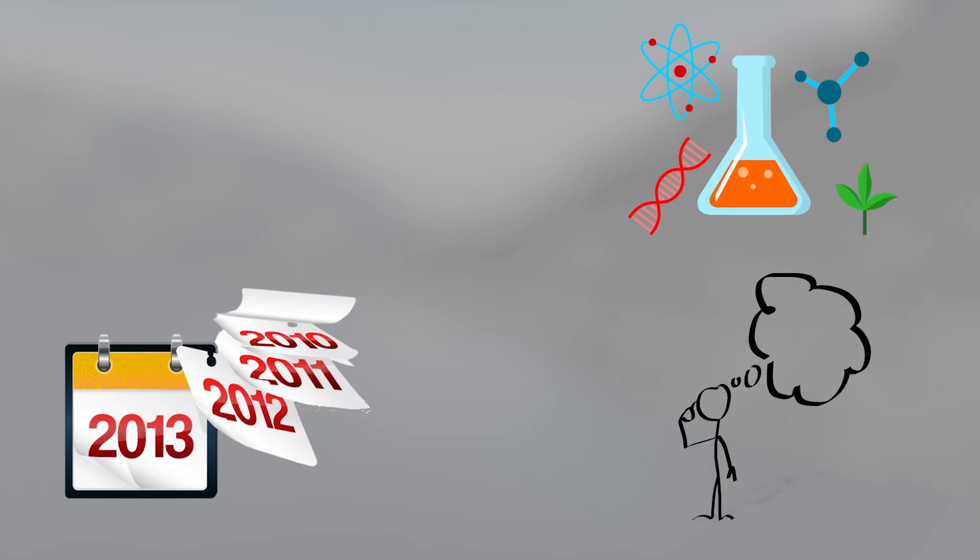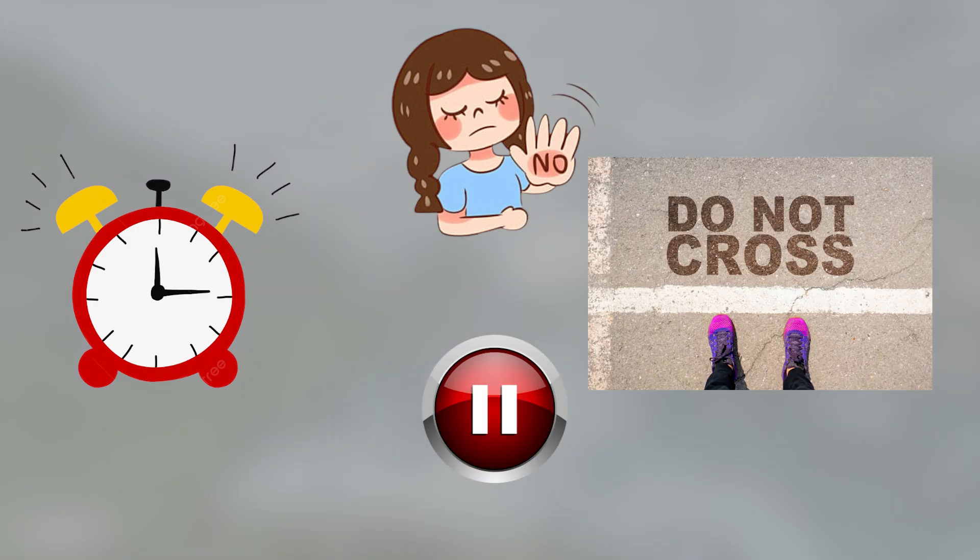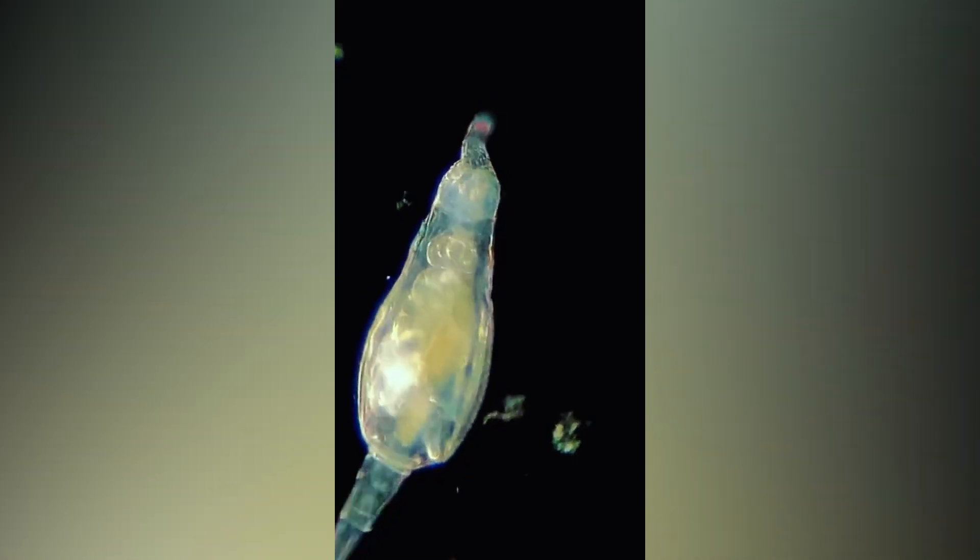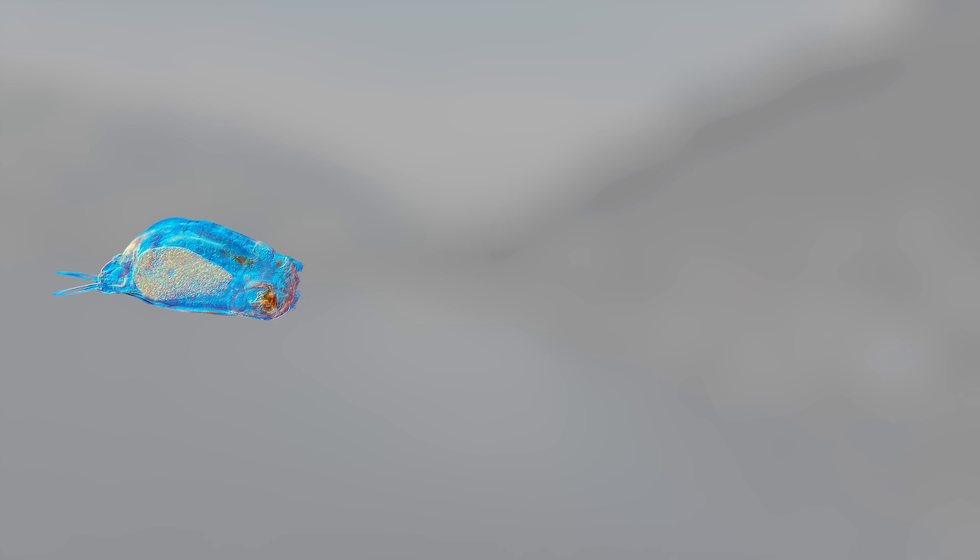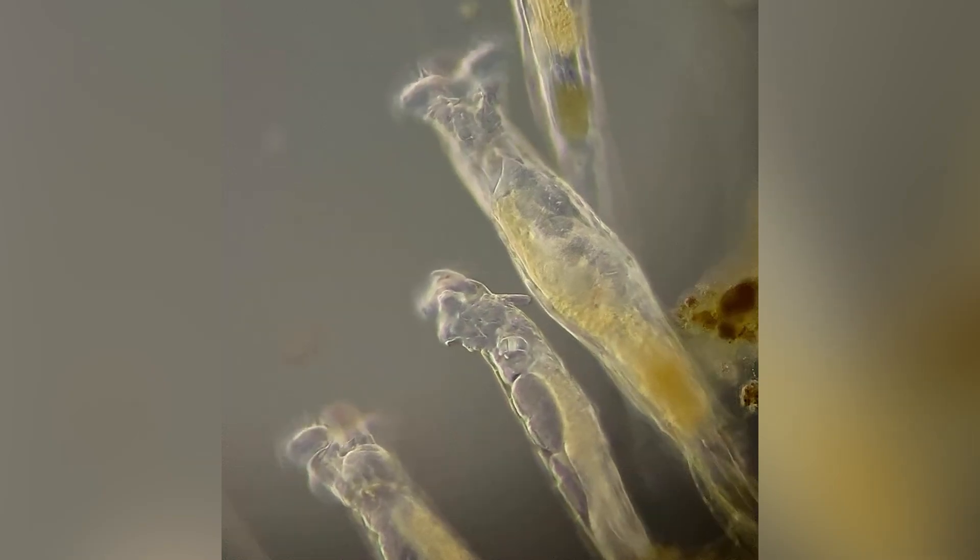For years, science assumed that life had limits—a clock you couldn't pause, a line you couldn't cross. But this tiny creature just proved otherwise. If rotifers can survive for 24,000 years, what does that say about life's true capacity?